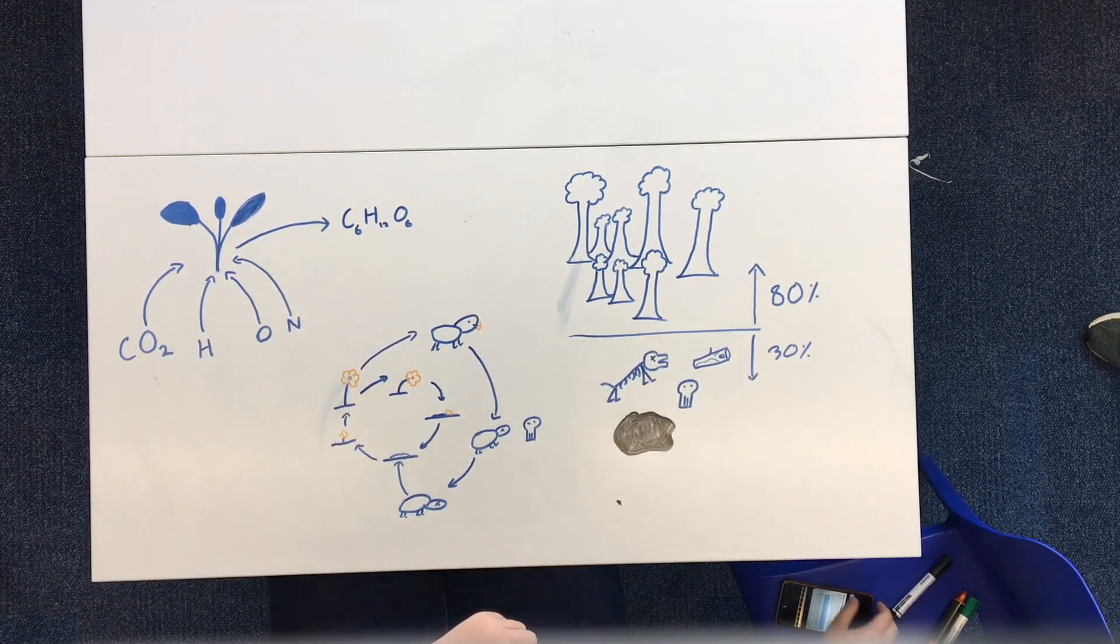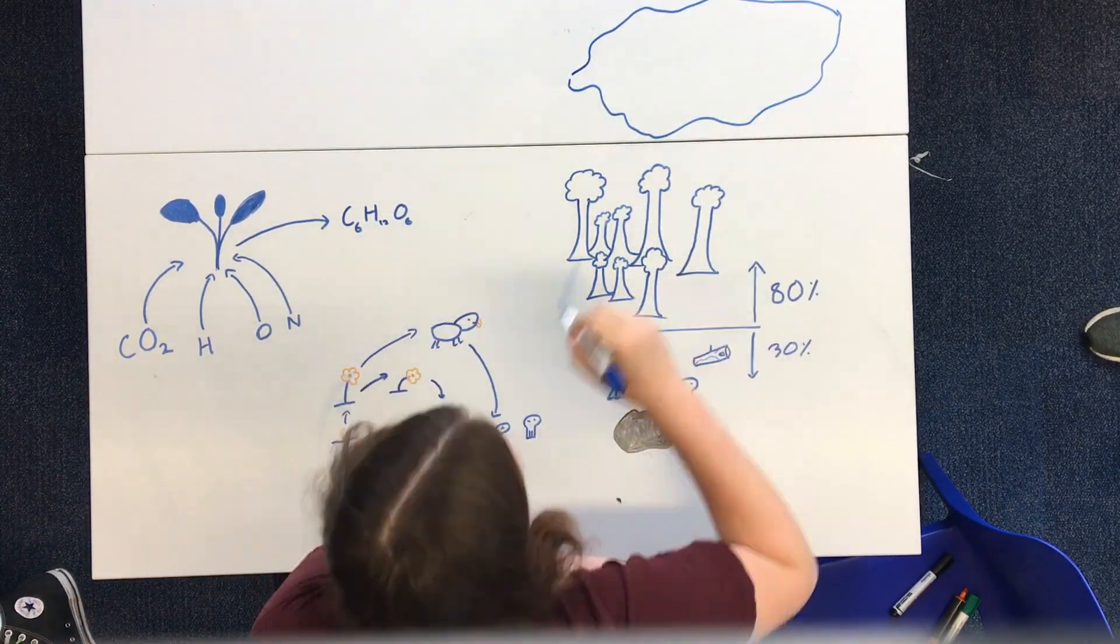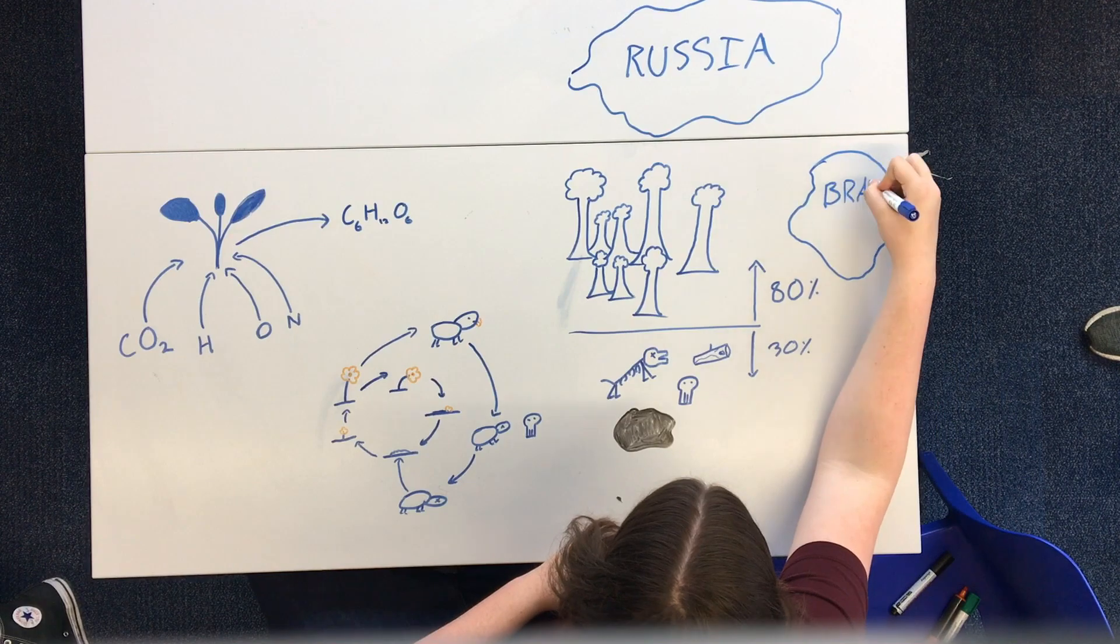And believe it or not, some 45 percent of this carbon is stored in just two forest areas, the Russian taiga and Amazonia in South America. That's why the election of the recent conservative president in Brazil has freaked out environmentalists so much. It could be a big dent to the fight against climate change.